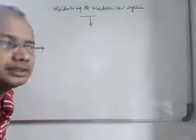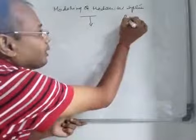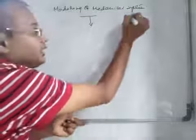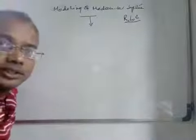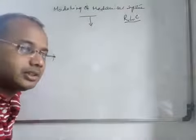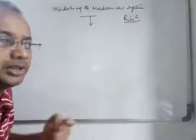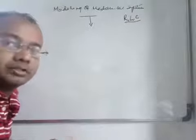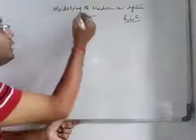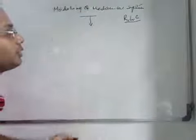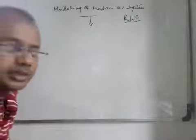In electrical systems, what you have learnt is that there are three basic parameters: one is R, one is L, and one is C — that means resistors, inductors, and capacitors. These are the three qualities which actually make an electrical network. Similarly, there are also three qualities to describe any mechanical system.